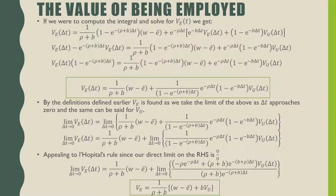Taking this limit, we find that the last chunk is indeterminate, meaning we have a zero over zero situation. In that case, we appeal to L'Hopital's rule — which you probably learned in your introductory calculus class — where you take the derivative of the top and bottom and evaluate the limit again. The final clean result for the value of being employed is 1 over (rho plus B) times (W minus E-bar plus B times the value of being unemployed).